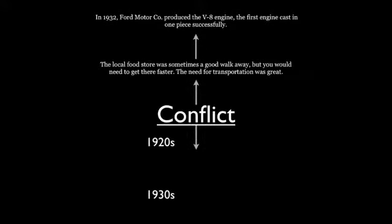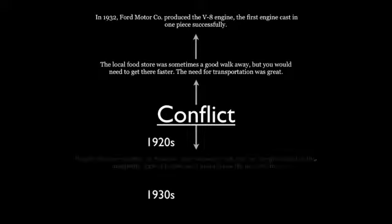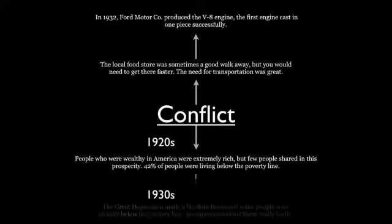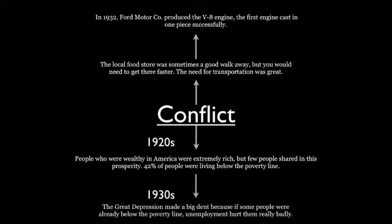Lastly, people who were wealthy in America were extremely rich, but 42% of people were living below the poverty line. The Great Depression made a big dent because if people were already living below the poverty line, it would hurt them really badly.